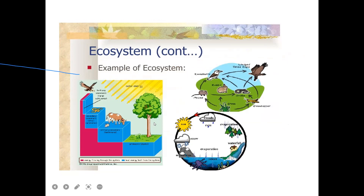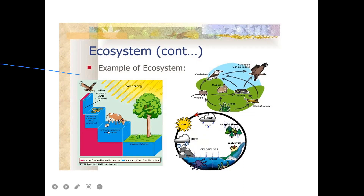An ecosystem is a dynamic complex of plant, animal, and microorganism communities and the non-living environment, interacting as a functional unit. A dynamic ecosystem makes the balance of nature. These are different types of ecosystems: forest ecosystem, grassland ecosystem, and ocean ecosystem. Based on the area, the dominant species varies — in a forest ecosystem, the producers are generally trees.